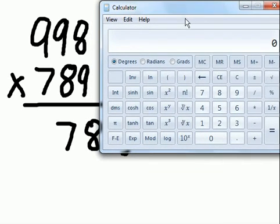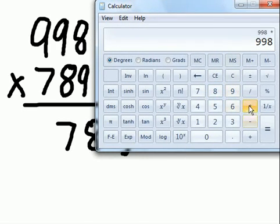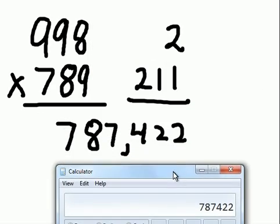Okay, I will. 998 times 789 equals 787,422. Well, what do you know!